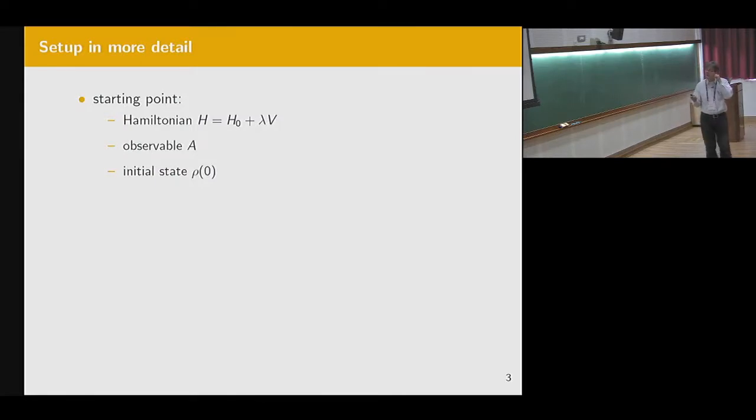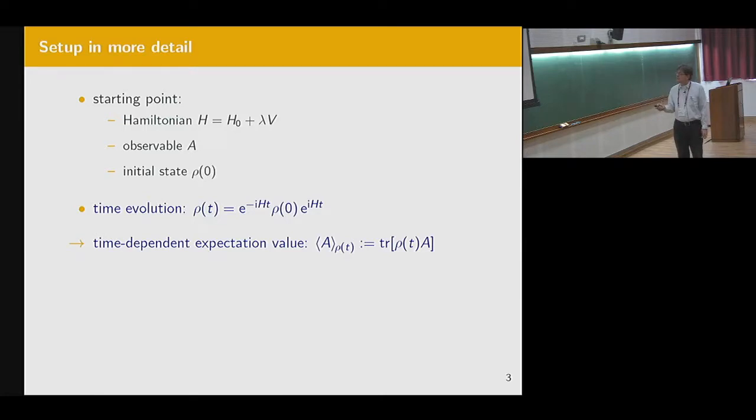So in more detail, the setup: we have this perturbed Hamiltonian H = H0 + λV and some observable A which is a self-adjoint operator and an initial state ρ0, which may be pure or mixed and usually is far from equilibrium. The time evolution of this state is governed as usual by the propagator corresponding to this time-independent Hamiltonian. That's how ρ evolves in time exactly. And then the time-dependent expectation value will be abbreviated by this symbol, expectation value, and it is given by the trace of the state at time t and the observable. That will give you the relaxation behavior or the time-dependent behavior of the system.